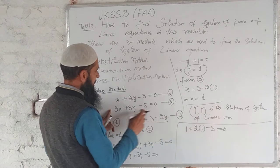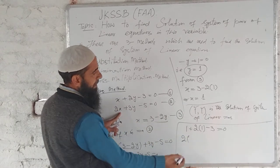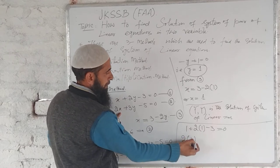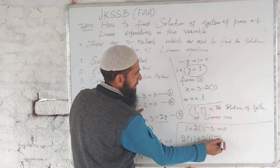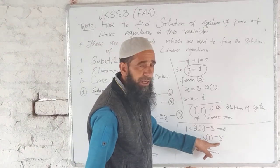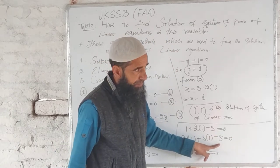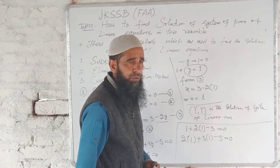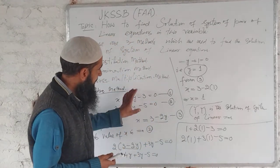Now substitute 1, 1 in equation second. That is 2 into X value 1, plus 3 into Y value 1, minus 5. Similarly, 2 plus 3, that is 5, minus 5, it becomes 0. It is same as RHS. Therefore, 1, 1 is the solution of the given system, this system of linear equations.